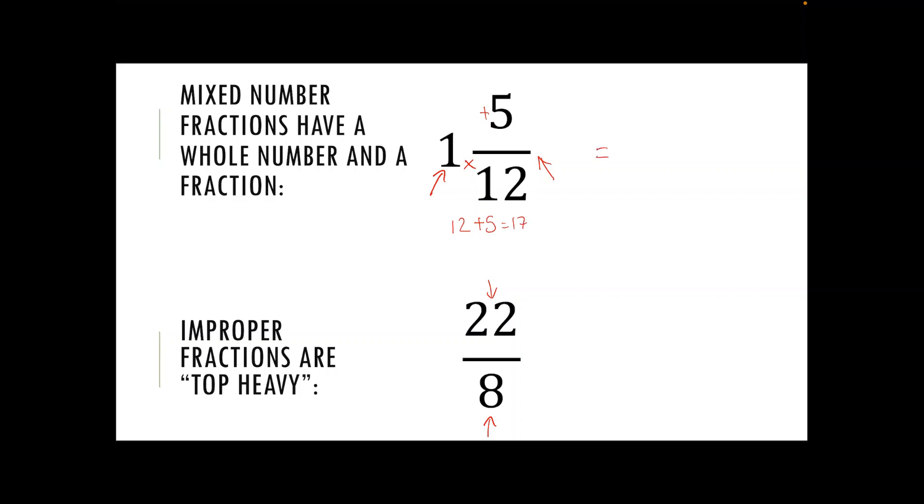So our new top heavy fraction is going to be 17 out of 12. The denominator doesn't change, it's staying as 12.